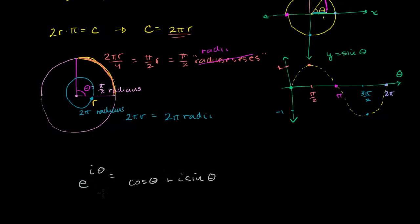This by itself is just one of those mind-boggling results, but it sometimes looks even more mind-boggling when you put pi in for theta. From Euler's formula, you get e to the i pi is equal to — well, cosine of pi is negative 1, and sine of pi is 0.